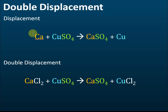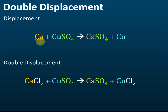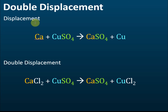Let's look at the displacement reaction first. If we react copper sulfate with calcium, and calcium is more reactive than copper, then calcium will kick out copper and take its place to form calcium sulfate. The copper is left alone. We say calcium displaces copper from its salt to form calcium sulfate — this is called a displacement reaction.